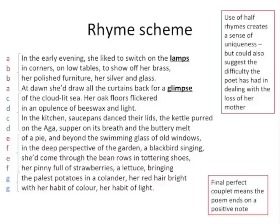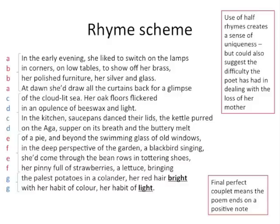If you look here, we've got 'lamps' and 'glimpse', 'flickered' and 'purred', and 'light' and 'melt'. So these words rhyme, but they don't quite rhyme perfectly. And that creates a sense of uniqueness, building up again this idea that the mother was a very unique person. But it could also suggest the difficulty that the poet has had in dealing with the loss of her mother. At the end of the poem, we do have that final rhyming couplet, which is a perfect rhyme, and that means that the poem ends on a positive note.